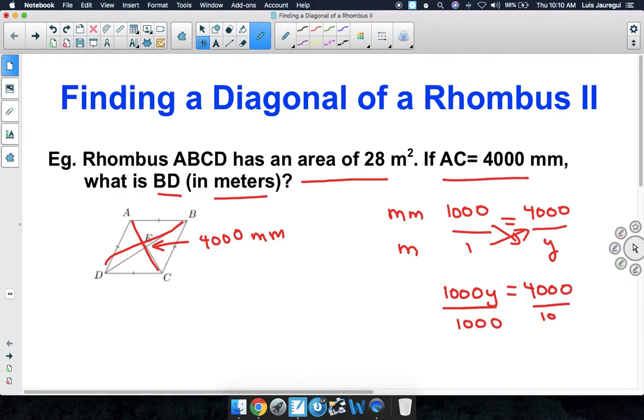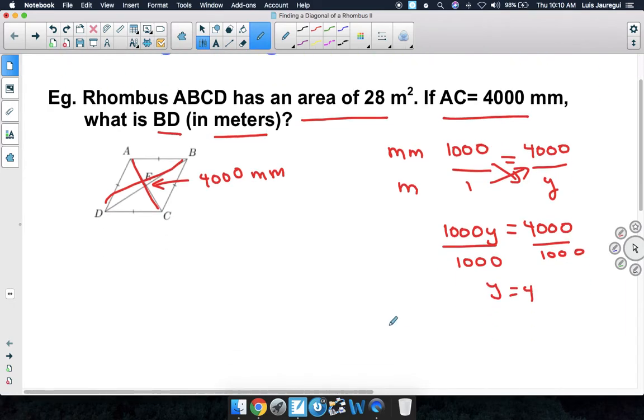Notice that we can say simply that Y is equal to 4. So we can conclude the following. We can say, therefore, the 4,000 millimeters are equivalent to 4 meters.